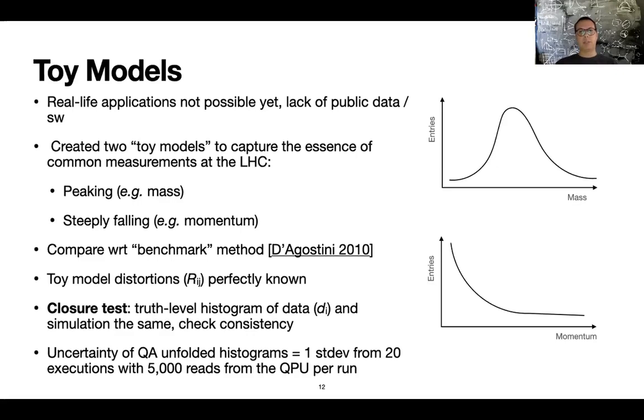We had to introduce some simplification. So for example, the distortions are supposed to be well-known, so completely known, while in real life there are always associated with some uncertainties. And our test is substantially a so-called closure test. So we know the truth level of both what we use to train the system and of what we use as pseudo data that are being unfolded. The idea is that the unfolded data have to match exactly the truth level that we created. So it's not coming from nature, something that we created from the computer simulation. And so the answer that is associated with the results are equivalent to a one standard deviation calculated from 20 executions of the experiment, and each execution has 5,000 reads from the QPU.